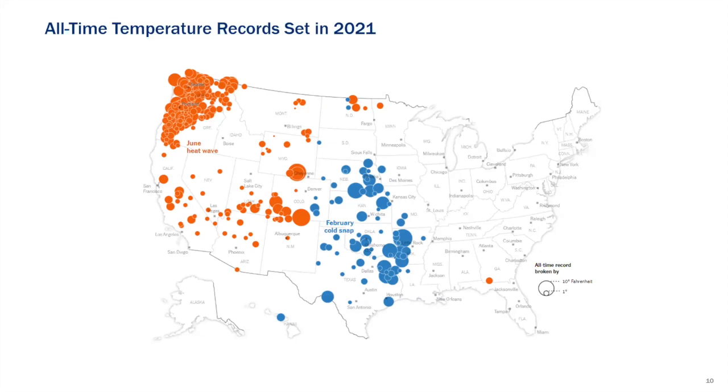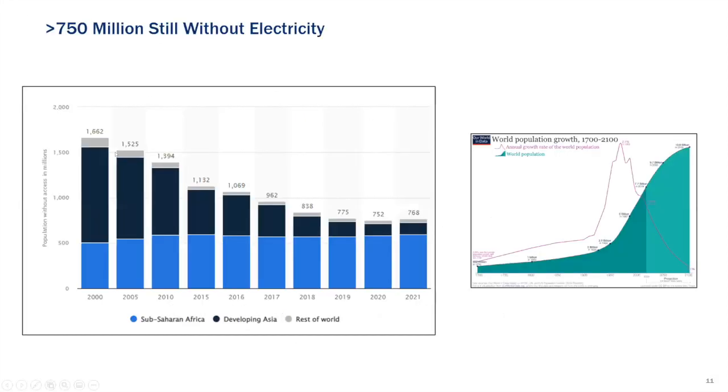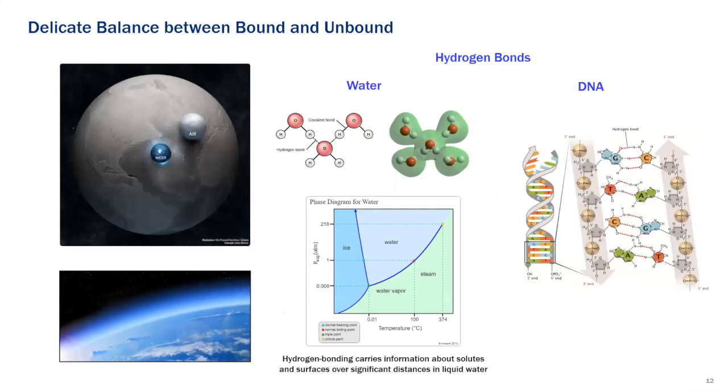And also, you know, hey, all temperature records that were set in 2021, you can see that by 10 degrees, right, are these big dots, both hot and cold. So it's, you know, the world without electricity, you know, the population growth is leveling off, supposed to be about 11 billion in 2100. But so many people that do have electricity still don't have air conditioning, right? And so think of the impact on the earth, as more people get electricity, more people get air conditioning, etc.